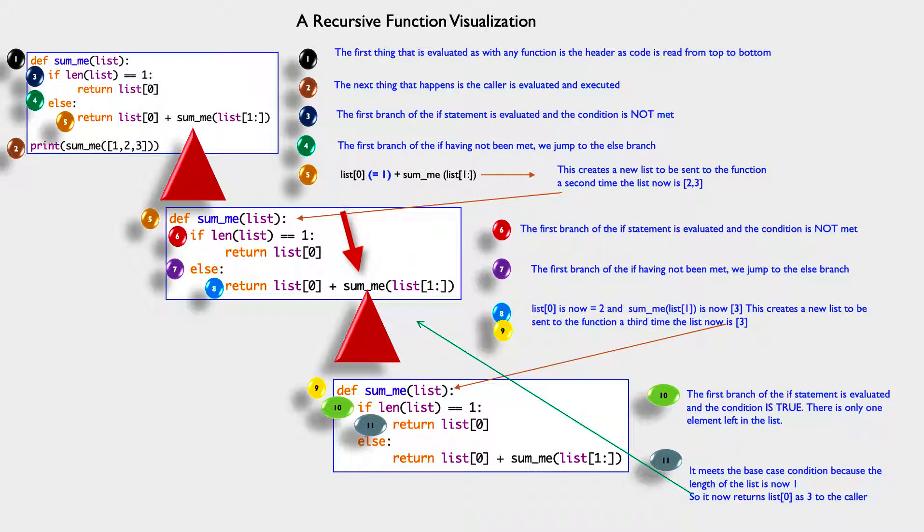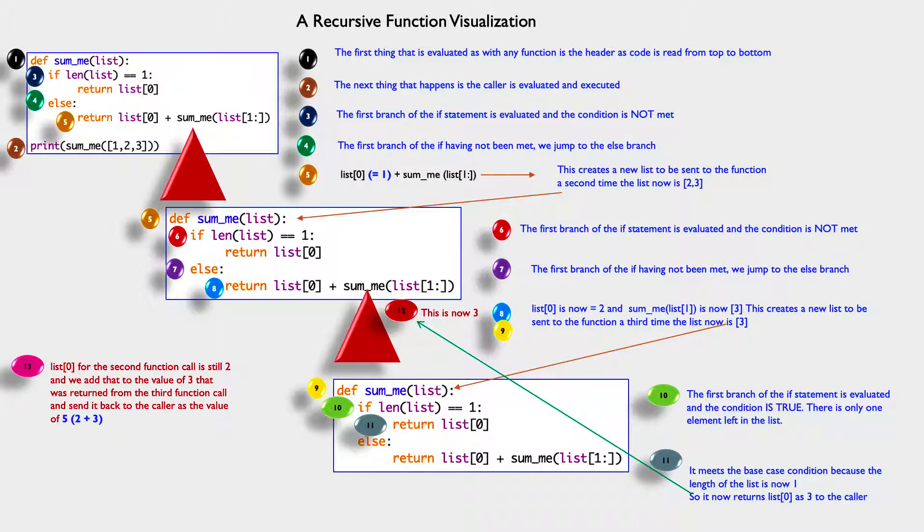As what? As the number three. That's what happens this time. Now list[0] for that second function call from the first time we went through it remains two. So at this point, we add that value to the three that we got from the third time we went through the function.